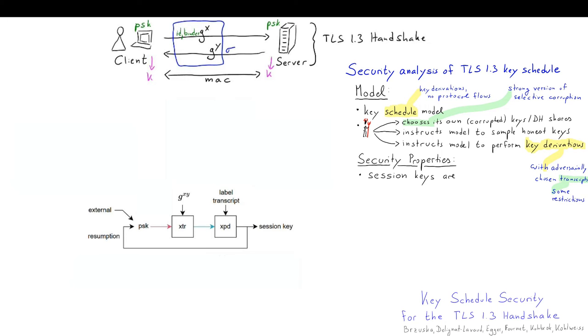In this model we prove that the session keys are pseudo-random and unique. Pseudo-randomness holds if the last PSK or Diffie-Hellman secret were honest, and uniqueness also holds for all dishonest keys, which follows from the restrictions on the transcript.